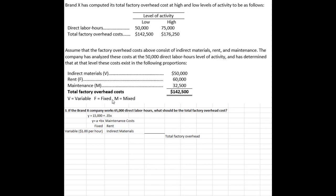We know the factory overhead is made up of three things: indirect material, rent, and maintenance. We know the rent is fixed costs. I've laid out all three costs here — maintenance, rent, and indirect materials — and this is how we're going to calculate the cost at the projected direct labor hours of 65,000.